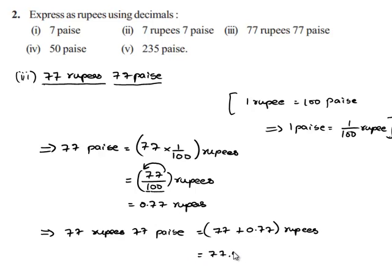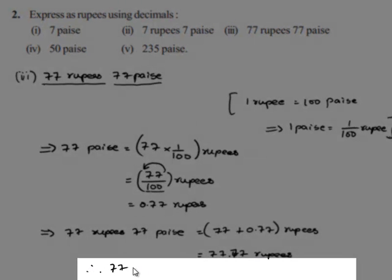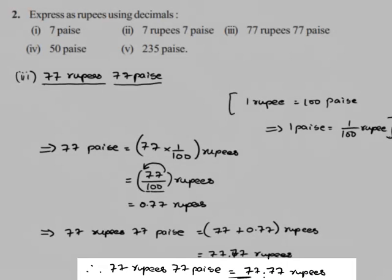Therefore, 77 rupees and 77 paise is equal to 77.77 rupees.